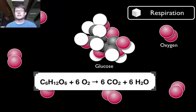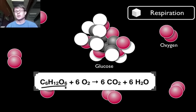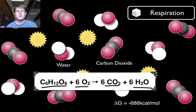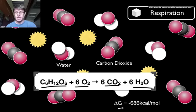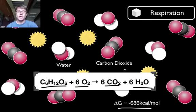Next, cellular respiration. In cellular respiration, we use the energy in sugars — in glucose — and in the presence of oxygen, break that down into carbon dioxide and water, releasing energy. Breaking down glucose is an exergonic reaction. We make carbon dioxide, water, and most importantly, energy in the form of ATP.